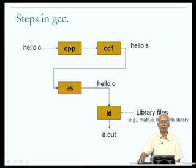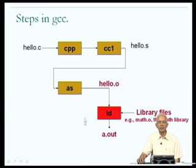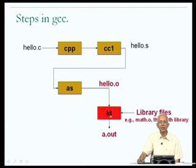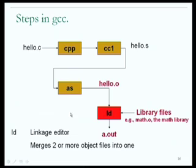Going back to the steps in GCC, the hello.c program first goes through CPP, then CC1, then AS, then LD. Let me concentrate on what happens in the step called LD. In the step called LD, a temporary file generated by the previous step AS is taken in along with library files, and what LD does is to produce a single output file called a.out. So we suspect that what LD does is to merge multiple files into a single executable object file. LD stands for linkage editor.